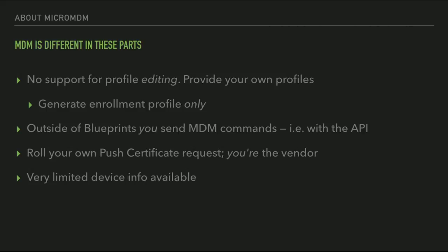The push certificates work a bit differently with MicroMDM. The primary way we recommend is doing the MDM CSR option with an enterprise developer account. When you do that, you have to do a two-step process rather than the one-step round trip to identity.apple.com you're probably familiar with. You also have to generate your MDM CSR certificate that signs the request. We also have very limited device info — we track the minimal amount of information to securely enroll a device and keep the enrollment going. The DeviceInformation command is how you get additional info.